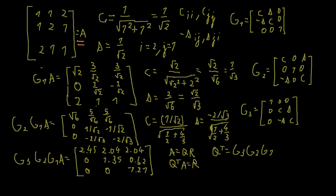Remember the formula. We have our cosine and our sine. Cosine is given as the top element of the column vector we consider — so the top element over the square root of that top element squared plus the element we want to eliminate squared. So it will be 1 over the square root of 1 squared plus 1 squared, which is 1 over square root of 2. The sine similarly will be the element we want to eliminate over the square root of that element squared plus the top element squared.